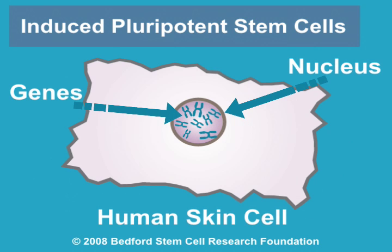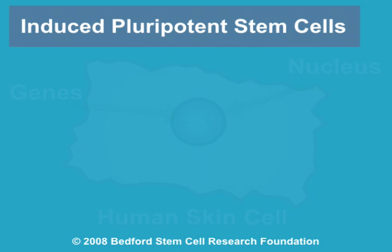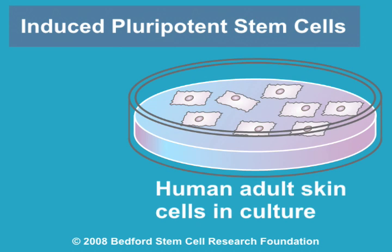Although the pluripotency genes are present in all cells, they are turned off in normal adult cells. Because it is not yet known how to turn them on,